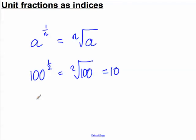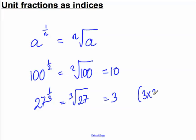Let's pick another one. Something like 27 to the third. Well, that's equal to the cube root of 27. What number multiplies by itself three times to get 27? Well, three does, because three times three times three is equal to 27.